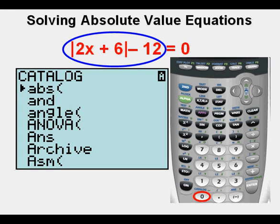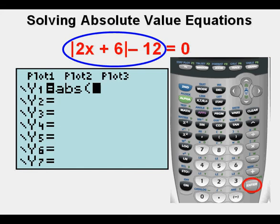Then we press the zero key at the bottom of the keypad with the word catalog above it. We're looking for the ABS or absolute value operation which luckily happens to be alphabetically at the top of the catalog. Since the little triangle is already just to the left of ABS we're exactly where we need to be. Now we press enter.